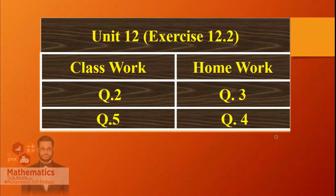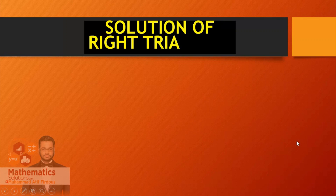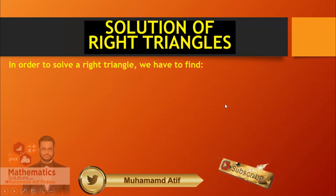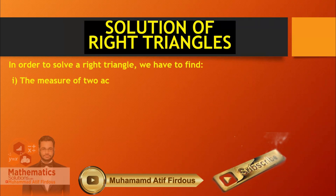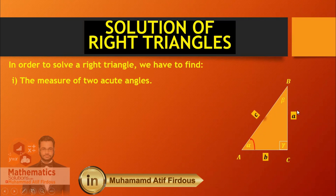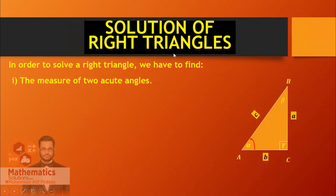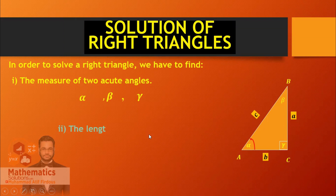Let me tell you some basics. If you are going to talk about a right angle triangle, the solution of a right angle triangle involves two acute angles. In order to solve the right angle triangle we have to find the measures of two acute angles. Acute angle means less than 90 degrees — these are alpha and beta. A triangle has three angles: alpha, beta, and gamma, and three sides of lengths small a, small b, and small c.